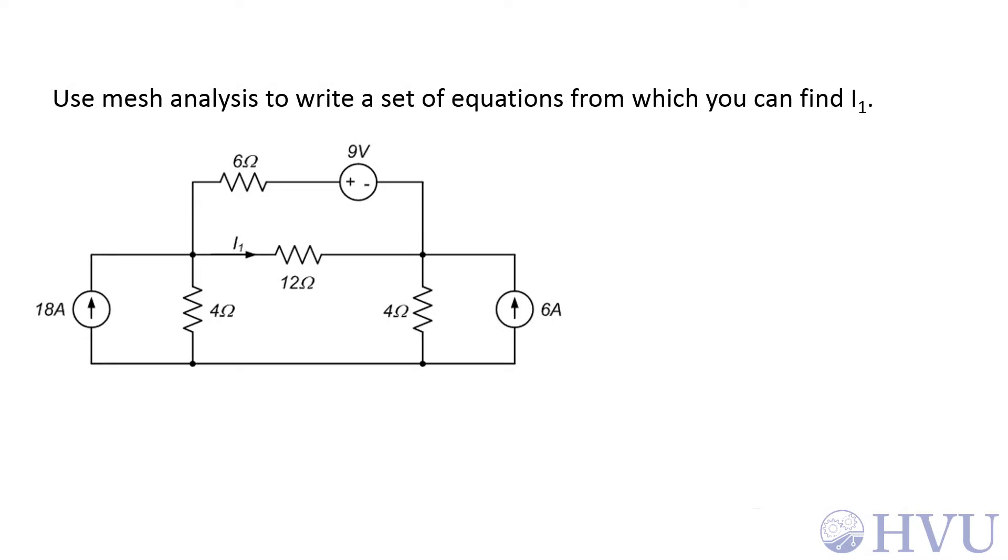The choice of constrained loops isn't unique. As long as my constrained loops account for all the currents in the current sources, they have no other restrictions. So I'm going to redo this example with a different set of constrained loops.